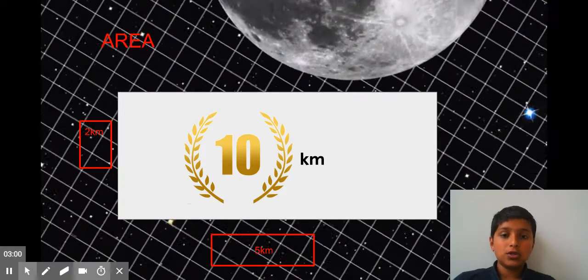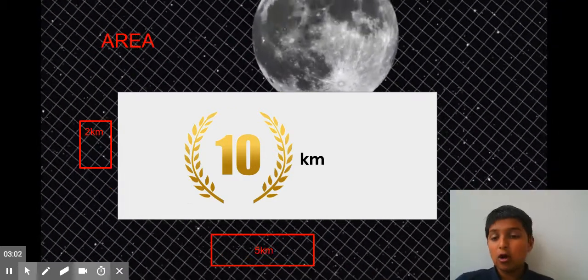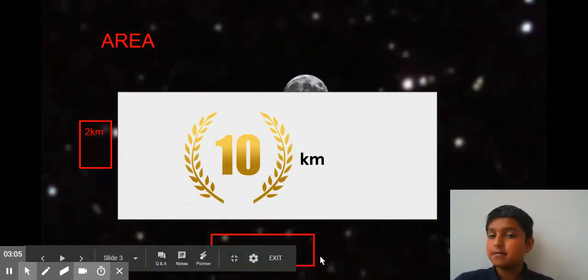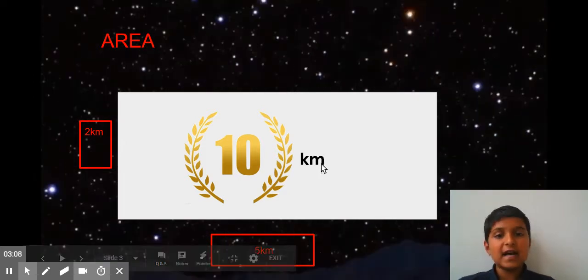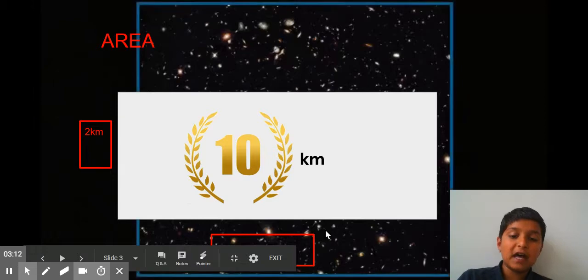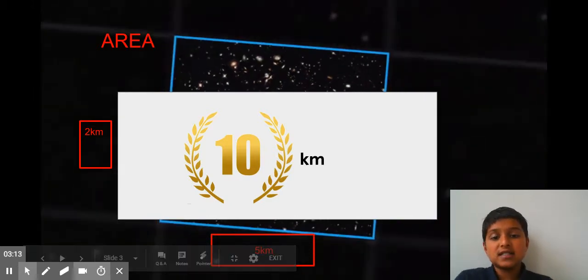So length times width: 2 times 5 kilometers equals 10 square kilometers. That will equal the area.